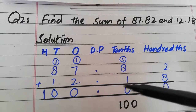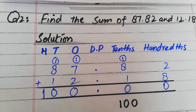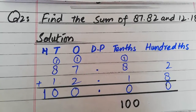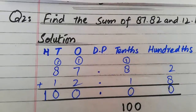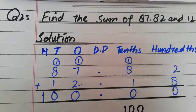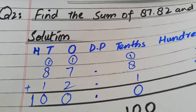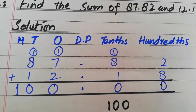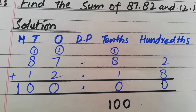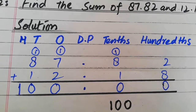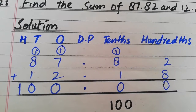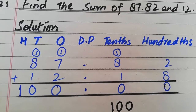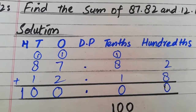کیونکہ point کے بعد اگر zero کے علاوہ کوئی اور digit نہ ہو تو ہم point ہٹا کر صرف integral part لکھیں گے۔ اس کا answer ہم صرف 100 بھی لکھ سکتے ہیں۔